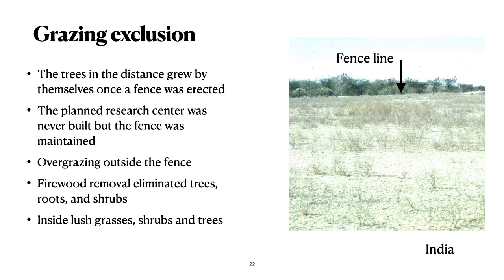In many cases, an area that's totally denuded and looks hopeless is really just a problem of continuing abuse. Here we have an example from India — the trees in the distance grew by themselves once a fence was erected. The planned research center was never built, but the fence was maintained, and you can see the difference inside and outside the fence. Inside the fence, trees grew, shrubs of all kinds, grasses, flowers — it was truly remarkable. Outside the fence, the most appalling weeds that even the goats didn't want to eat.